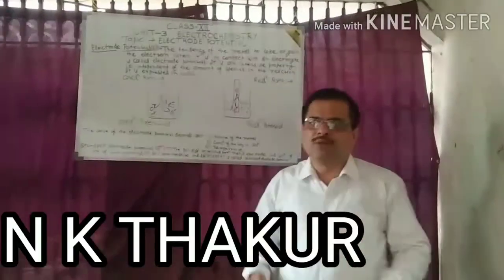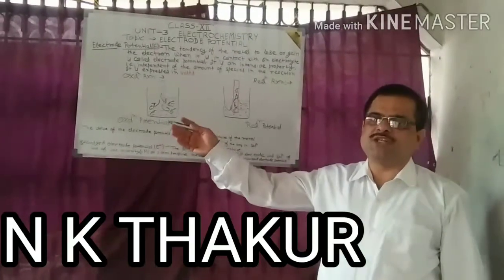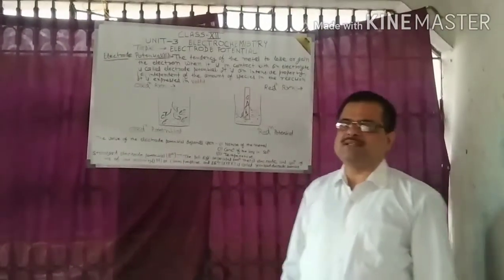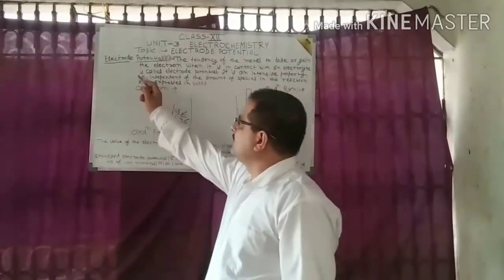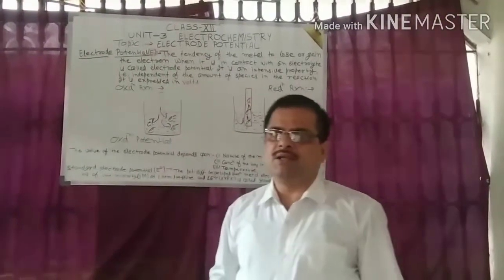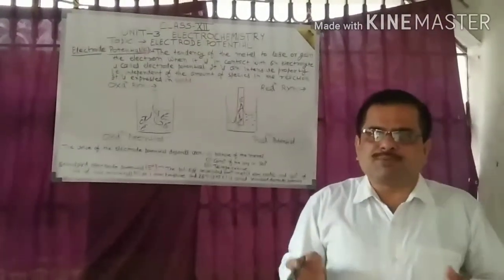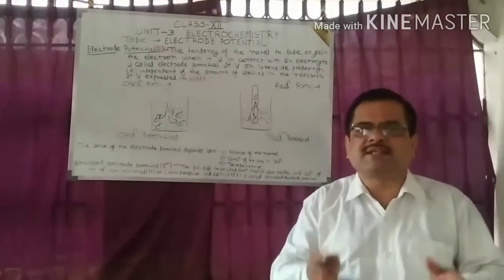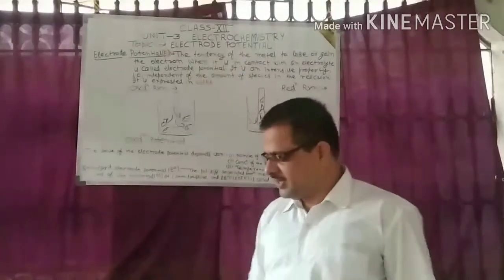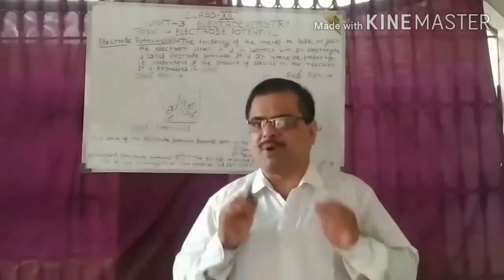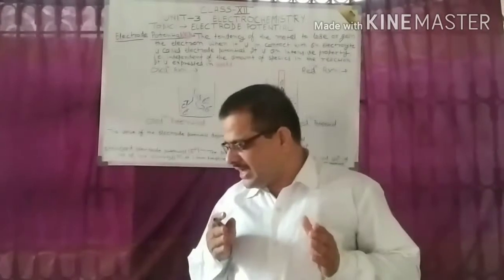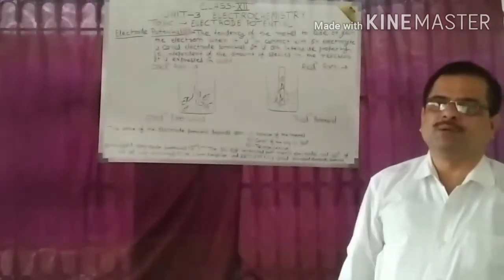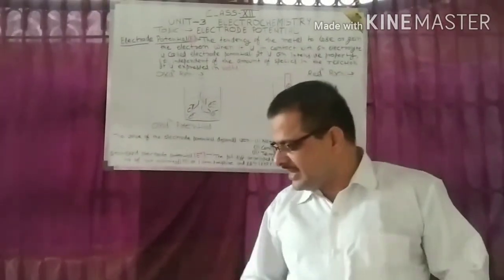Welcome to this video on electrode potential in electrochemistry for Class 12. Electrode potential is made up of two terms: electrode and potential. An electrode is the substance at the surface of which oxidation or reduction reaction takes place. Potential is untrapped power, unused ability, dormant strength, hidden power.